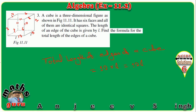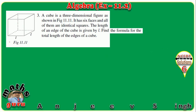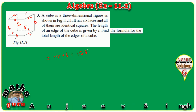If you count the edges of a cube, there are: 1, 2, 3, 4, 5, 6, 7, 8, 9, 10, 11, and 12. So the total number of edges is 12. The total length of all edges is 12L.